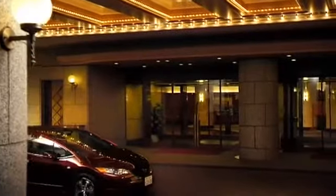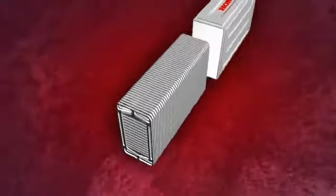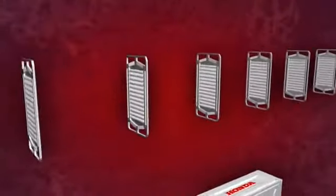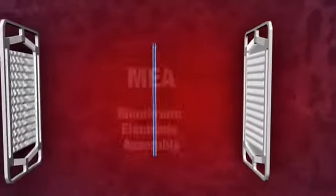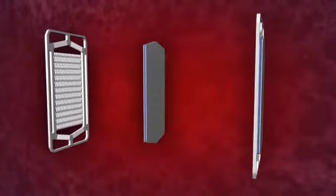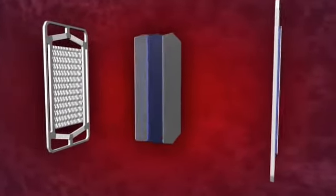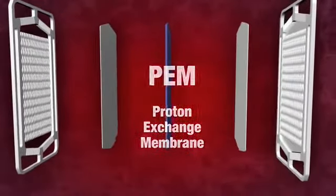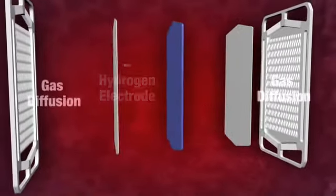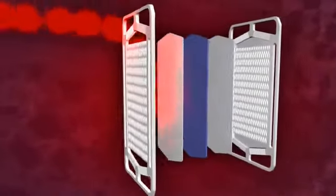The fuel cell stack is made up of hundreds of individual cells stacked together like a loaf of bread. In fact, each cell is like a sandwich with a membrane electrode assembly, or MEA, between two separators or bipolar plates. The MEA is made up of a proton exchange membrane, or PEM, which sits between hydrogen and oxygen electrode layers and gas diffusion layers. In each cell, hydrogen gas passes over the hydrogen electrode.